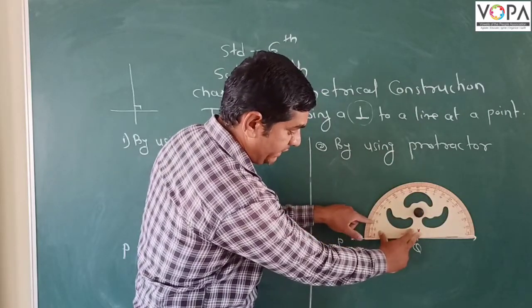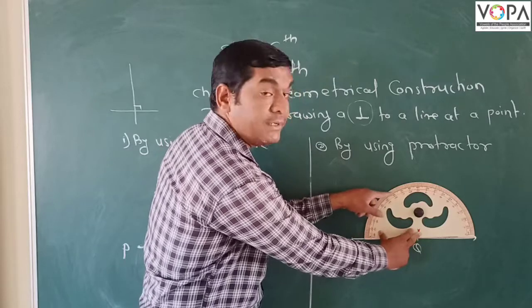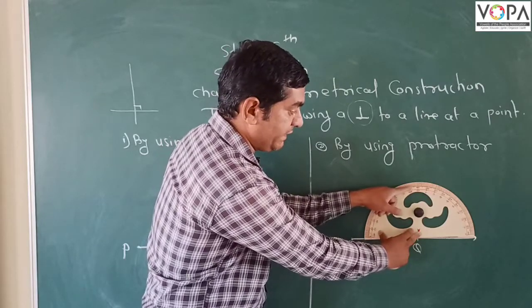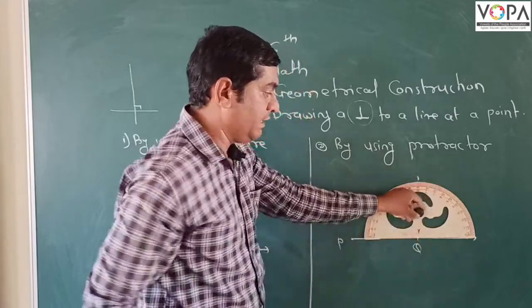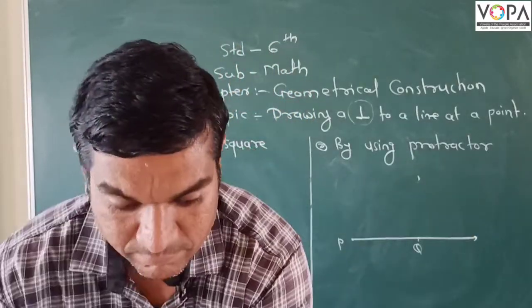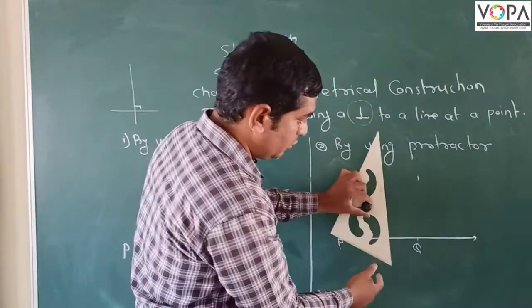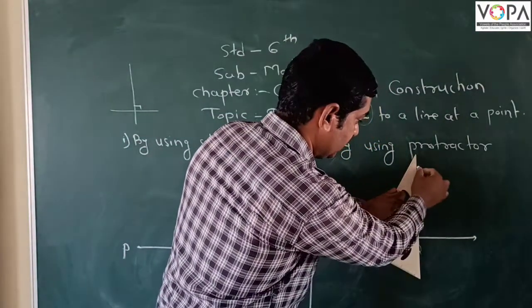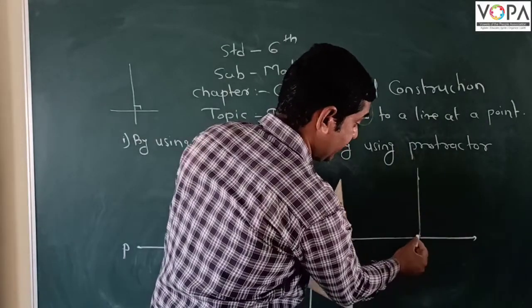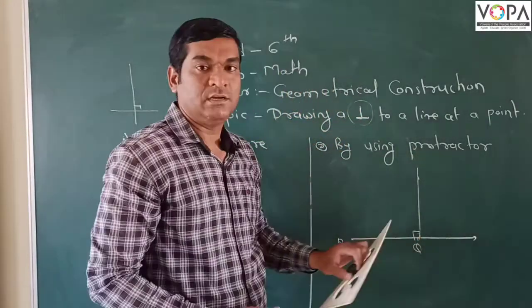So you count 0, 10, 20, 30, 40, 50, 60, 70, 80, and 90 degrees. So in this case, join these two points. If we join these two points, then we get the line as perpendicular.